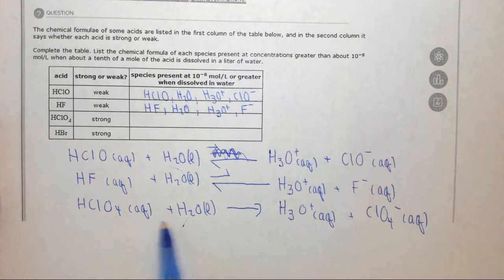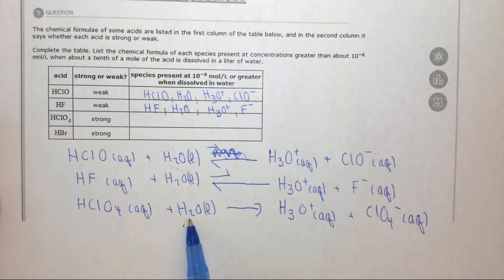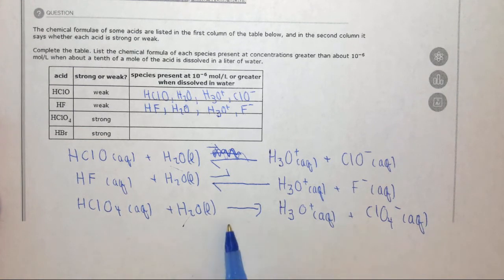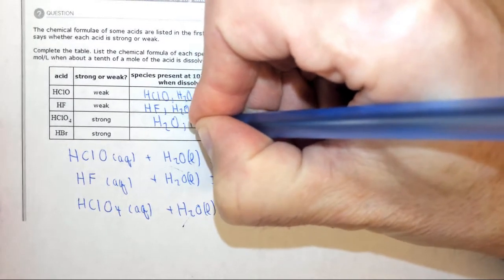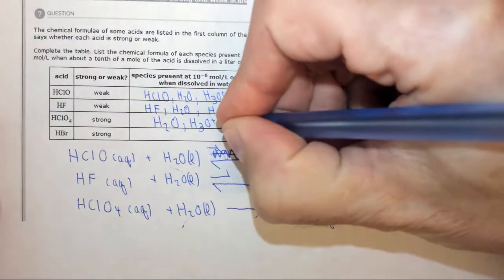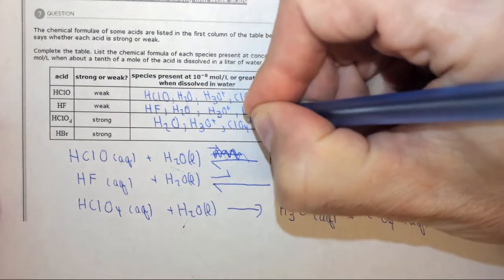Now this reaction is not reversible. There's a huge excess of water. Said another way, HClO4 is the limiting reagent, so this reaction is going to nearly or completely eliminate the HClO4. It's not going to completely eliminate water because there's a huge excess of water, but this will be gone. So all we'll end up with in solution is water, H3O plus, and ClO4 minus.